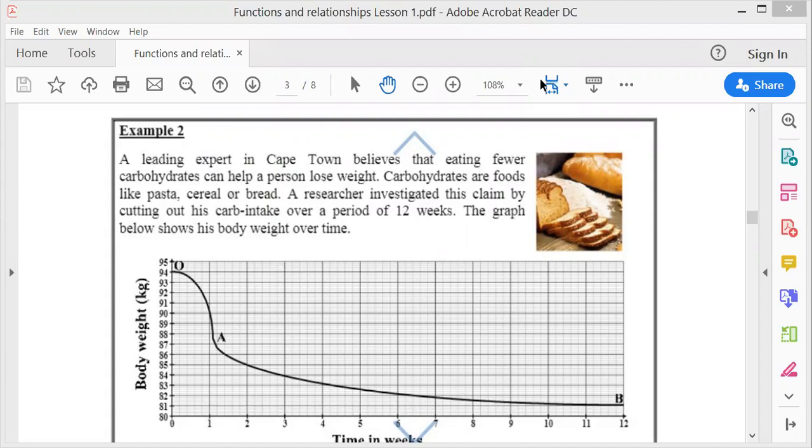Now a leading expert in Cape Town believes that eating fewer carbohydrates can help a person lose weight. Carbohydrates are food like pasta, cereals, or bread. A researcher investigated this claim by cutting out his carb intake. That was done over a period of 12 weeks. The graph below shows his body weight over time.